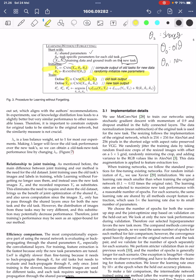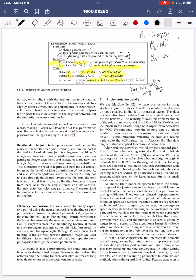In the loss function, we minimize the loss of the old task performance based on the current model, and also minimize the loss of the new task. Additionally, there is a regularization term using weight decay, which keeps the model weights simpler and prevents overfitting. This regularization needs to be empirically justified for each dataset.